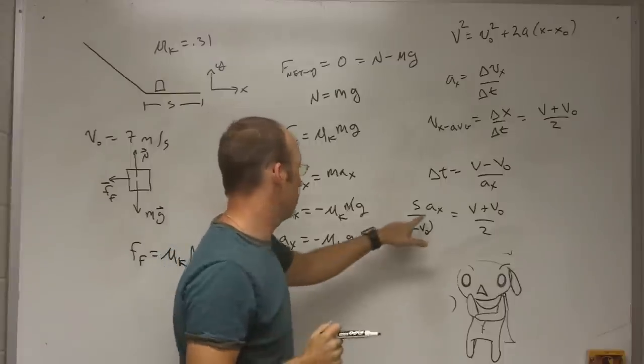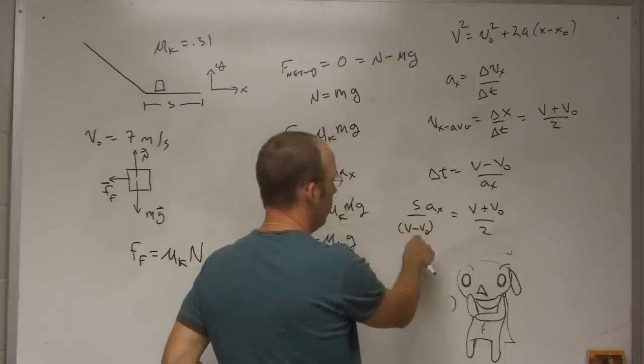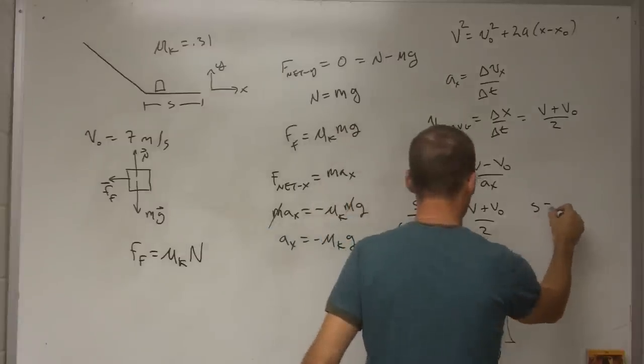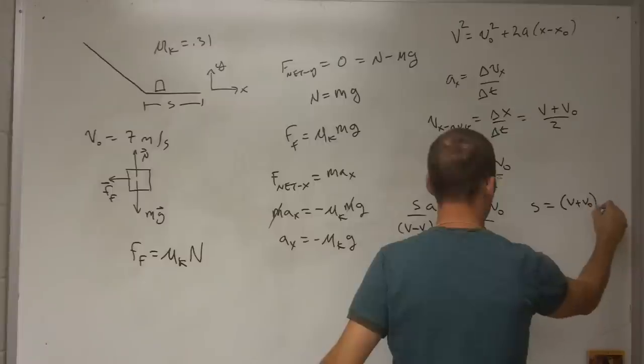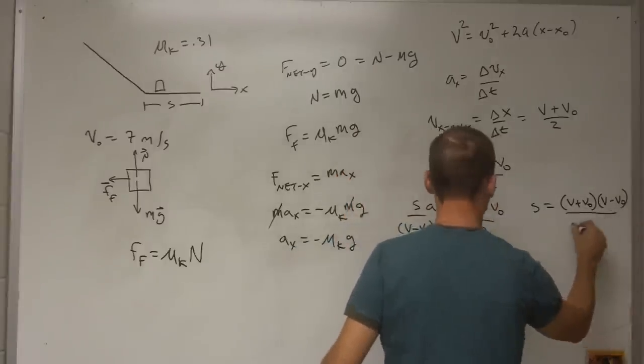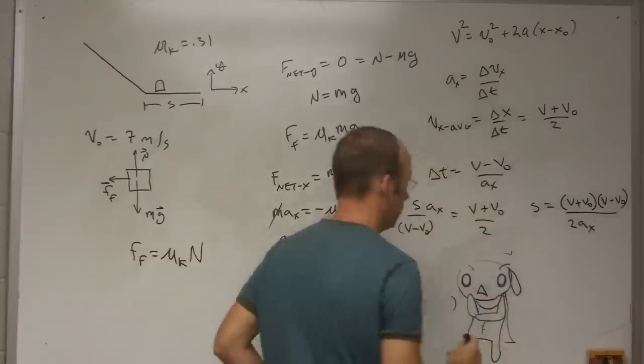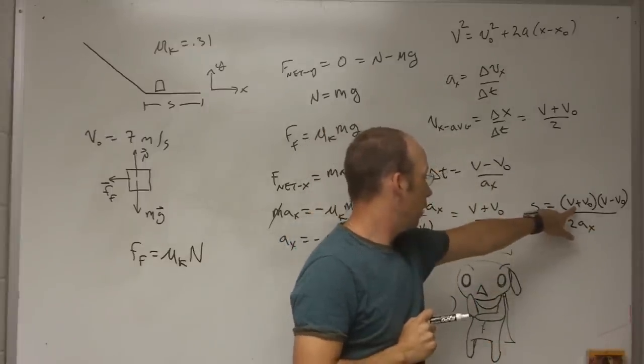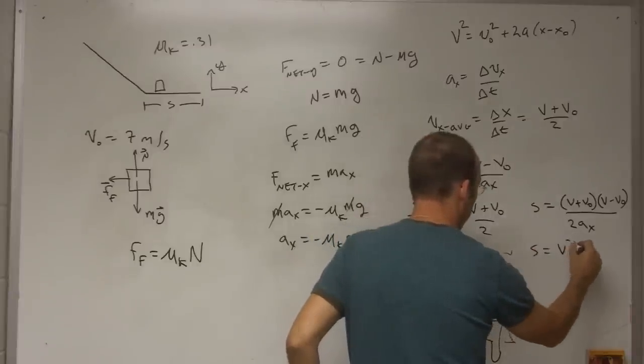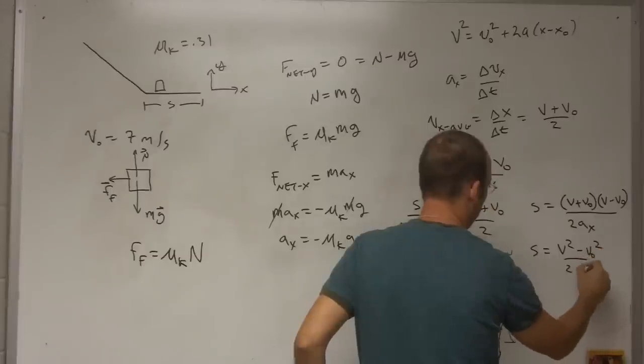And now I want to solve for s. I'll multiply both sides by v minus v naught over ax. And I get s equals v plus v naught, v minus v naught, over 2ax. And this is when I have v plus v naught times v minus v naught, I get v squared minus v naught squared over 2ax.